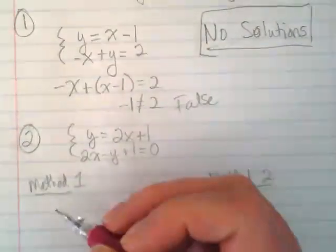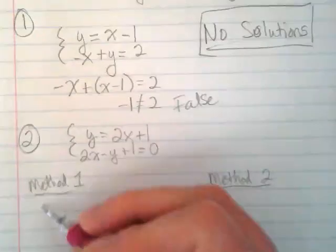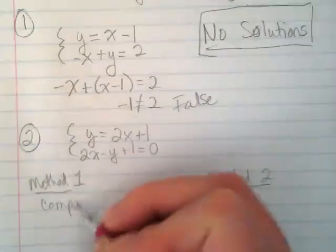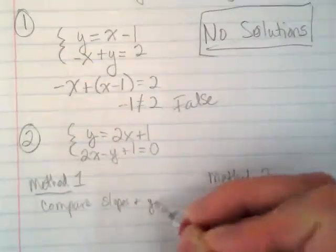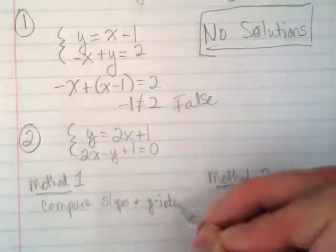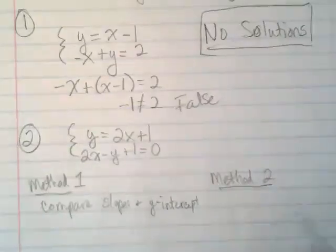Method 1 is to compare the slopes and y-intercepts. In order to do that, you need them to be in slope-intercept form.